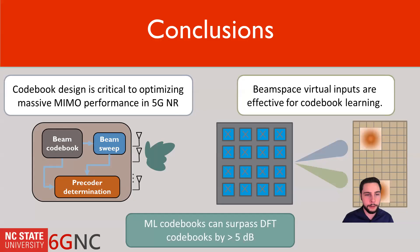So all told, what we can see here is that codebook design is really critical to optimizing the performance, especially in massive MIMO 5G, because it requires this beam training process that has very limited feedback. Furthermore, if you translate the feedback into this beam space, you actually can instill domain knowledge into the neural network and help really effectively learn codebooks from machine learning. And finally, our results show that you can surpass the DFT codebooks by more than 5 dB as much as 10 dB compared to an equal DFT codebook. So with that, I would just like to say thank you for your time, and feel free to reach out if you have any questions. Thanks.